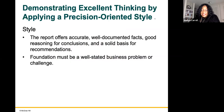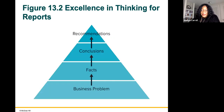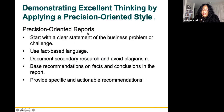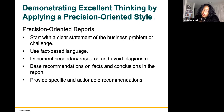Demonstrating excellent thinking and applying a precision-oriented style. The style means the report offers accurate, well-documented facts, good reasoning for conclusions, and a solid basis for recommendations. The foundation must be a well-stated business problem or challenge. You start with the business problem and outline it, then go to the facts, then conclusions, and finally the recommendations. Precision-oriented reports start with a clear statement of the business problem or challenge, use fact-based language, document secondary research, and avoid plagiarism by citing where you got the information from.